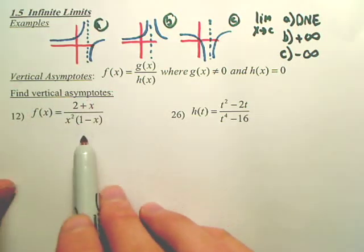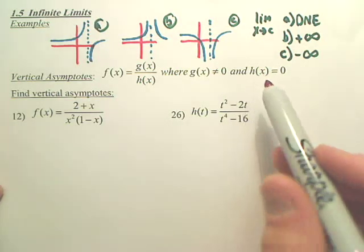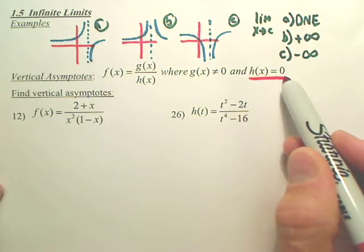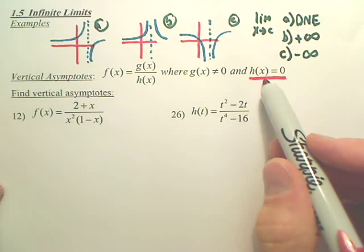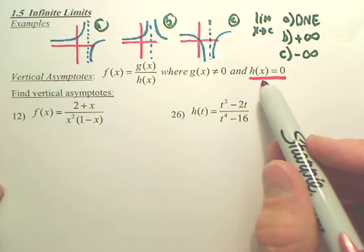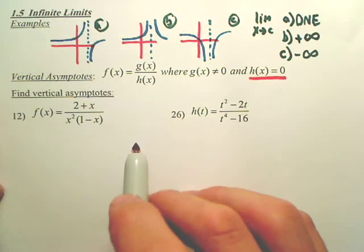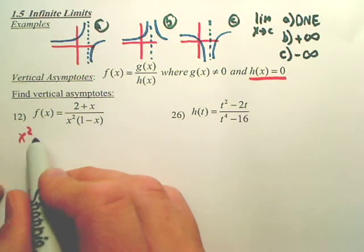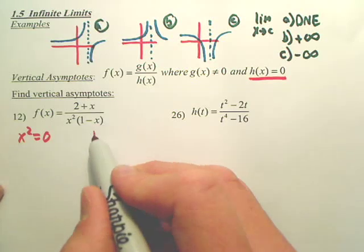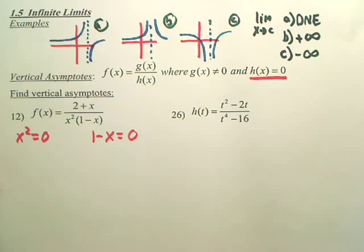So I'm going to find the vertical asymptote for this graph. So we look at this and think, I want to know where h of x equals zero. Where h of x equals zero will be my vertical asymptotes. h of x means the denominator. Where is the denominator equal to zero? So looking at this, where does x squared equal zero? And where does one minus x equal zero? Those are possible vertical asymptotes.